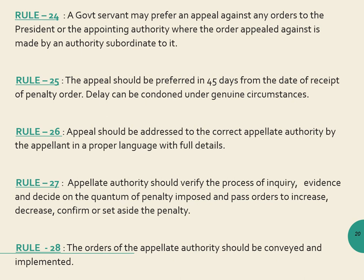Rule 25 specifies that any appeal must be filed within 45 days from the date of receipt of the penalty order. If there are genuine reasons for delay, the 45-day period can be condoned. The appeal should be addressed to the correct appellate authority, giving full details of the case in proper language. The appellate authority will verify the whole process — whether the inquiry process was complete, whether the evidence was adequate, and whether the quantum of penalty was reasonable — and then decide whether to increase, decrease, confirm, or totally remove the penalty.